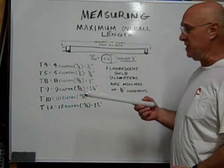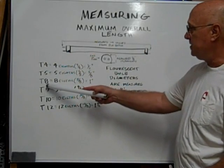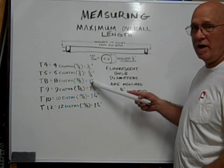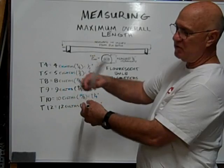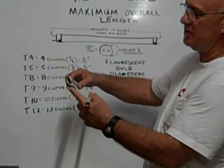This bulb is a T8. A T8 is 8 eighths or one inch. So you can see the difference. This one is 5 eighths and this one is 8 eighths.